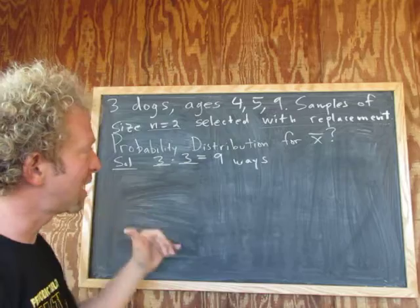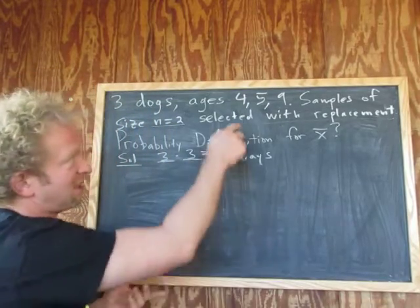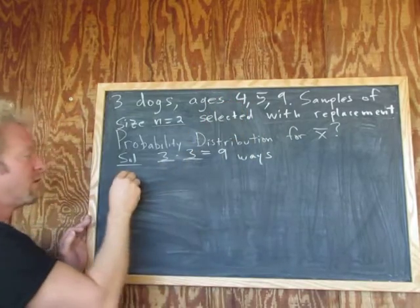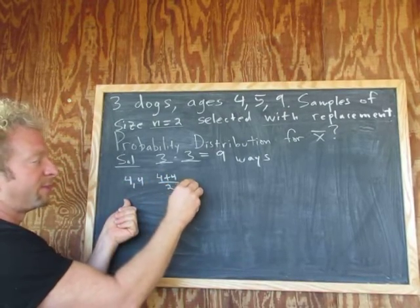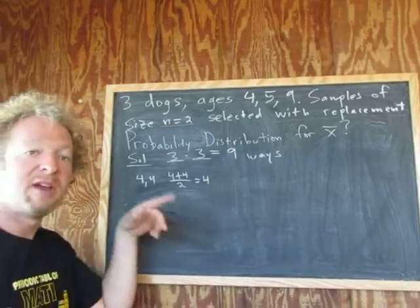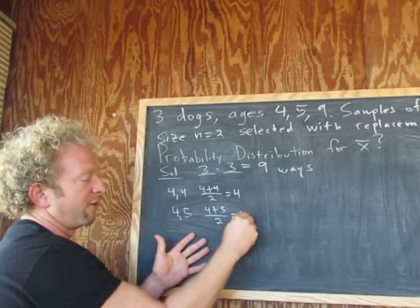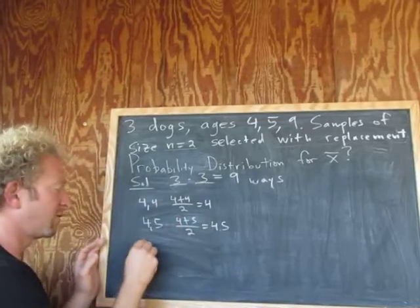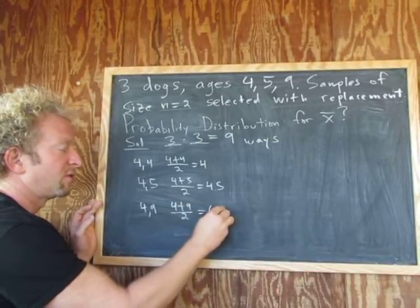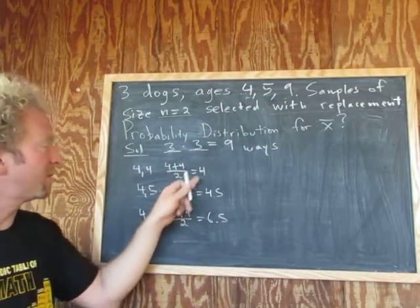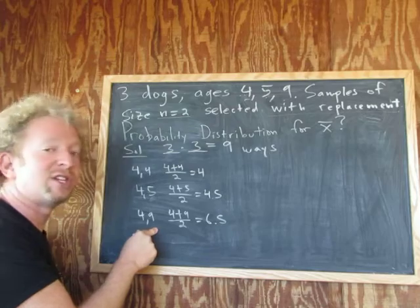Now we're going to list all nine samples, compute all nine sample means, and then write down the probability distribution. The first possible sample: take the dog that's 4 years old and then take it again — so (4, 4). The sample mean is four plus four over two, which is four. Next is (4, 5): four plus five divided by two gives 4.5. Then (4, 9): four plus nine divided by two — thirteen over two is 6.5. So we took (4,4), (4,5), (4,9), added them up and divided by two. The average age of the two dogs is 4, 4.5, and 6.5 respectively. Then we do (5, 4): x-bar will be 4.5.